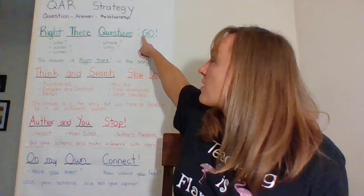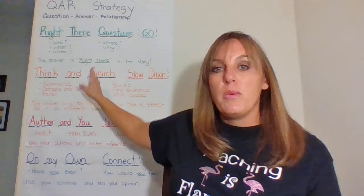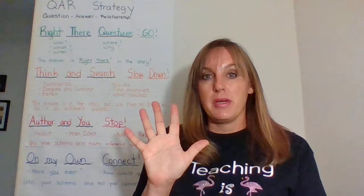Some of the types of questions we've talked about this week are the right there, or go, questions — remember, I can go and find my answer. We've also talked about those yellow, slow-down questions, like the yellow on the stoplight. We have to use some brain power and still search, but we can find the answer. It might even be across a couple of pages that we have to look.